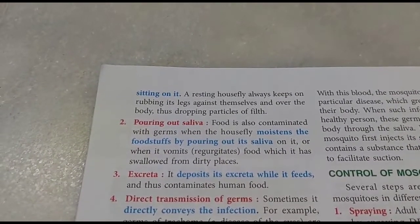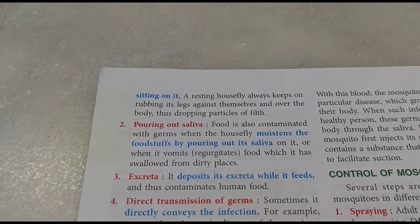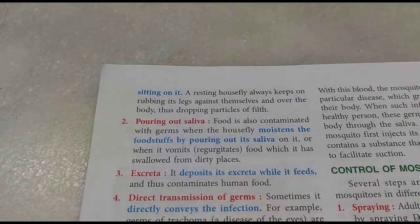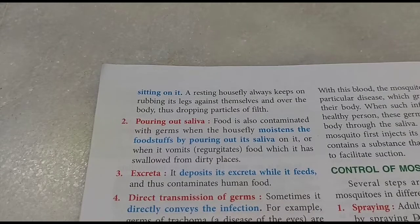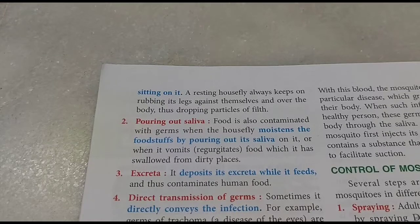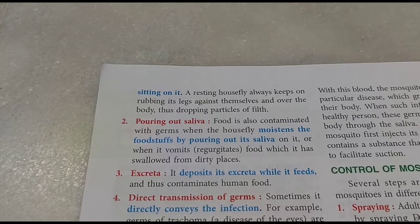The second method is through saliva - houseflies can't chew food, so they pour saliva through their proboscis to digest food so they can suck it, and in the process they contaminate the food. Third, when they vomit food (regurgitation), the food may also be contaminated. Fourth, their excreta - when they sit on food and excrete, it's so small we cannot notice it, but it contaminates the food.